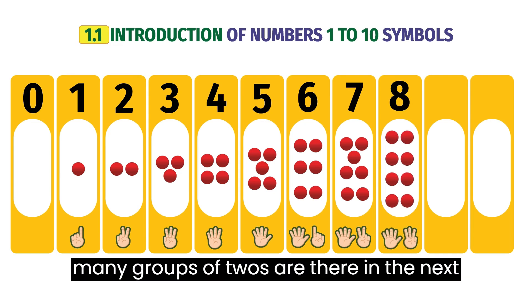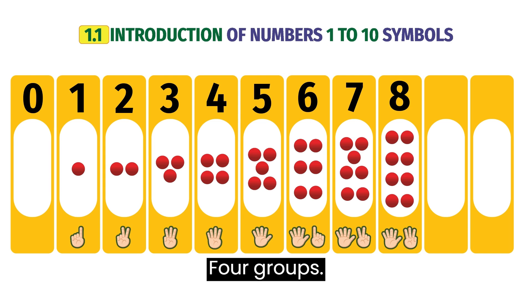How many groups of 2's are there in the next number? 4 groups. And the number is 8.